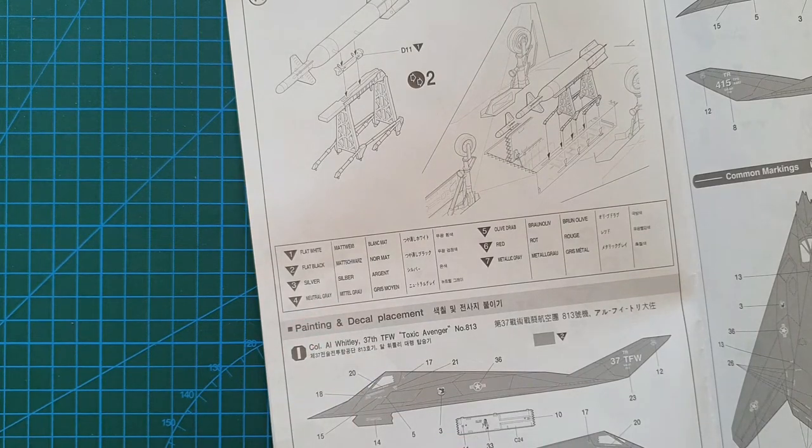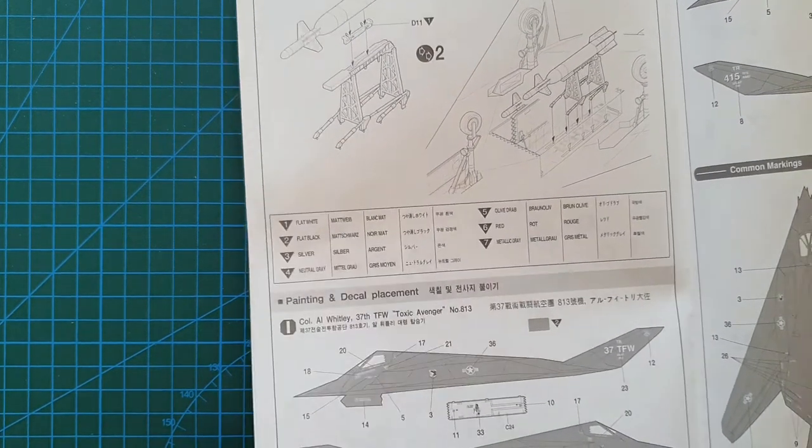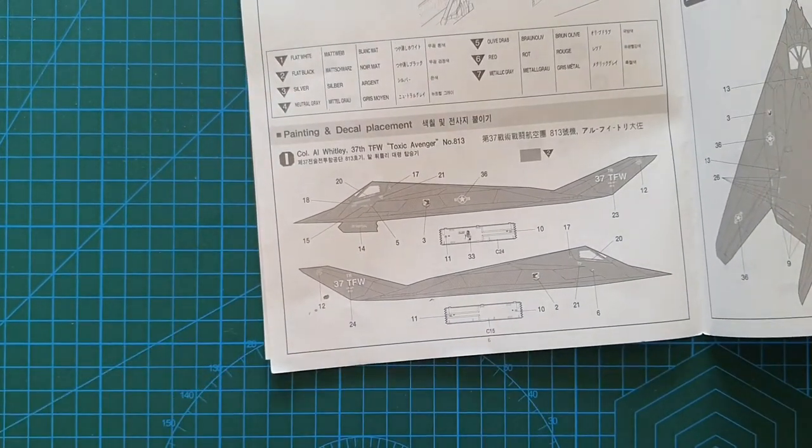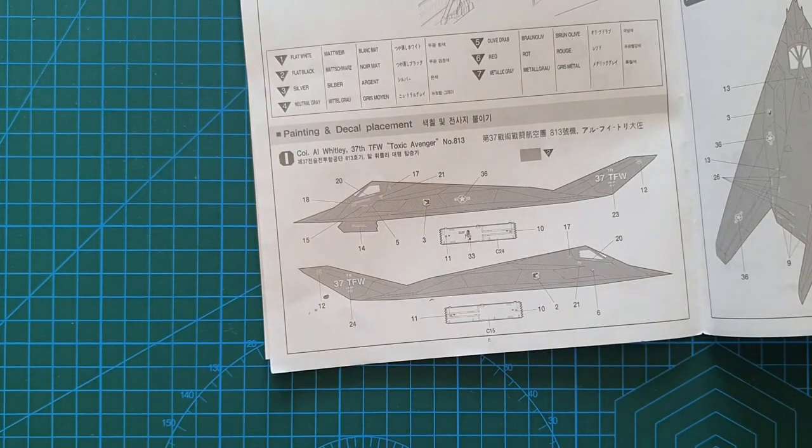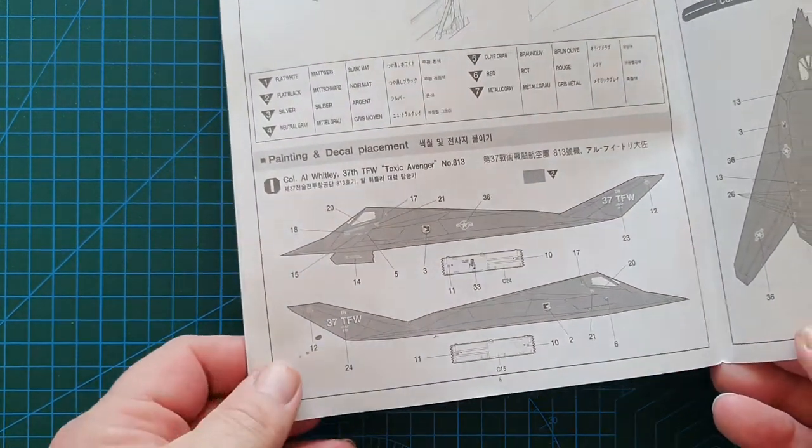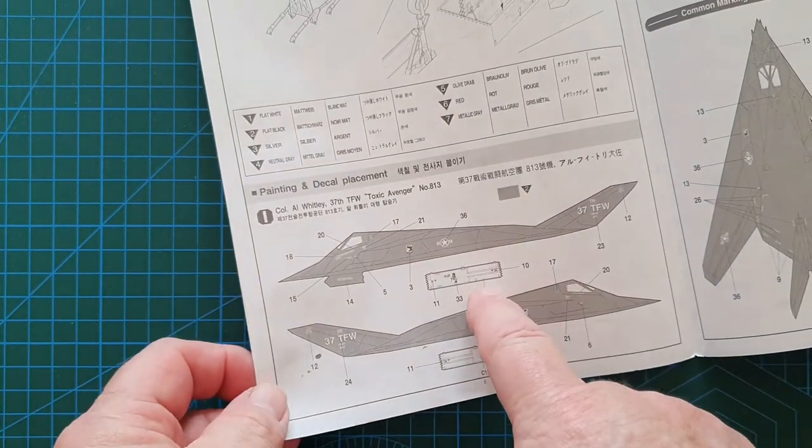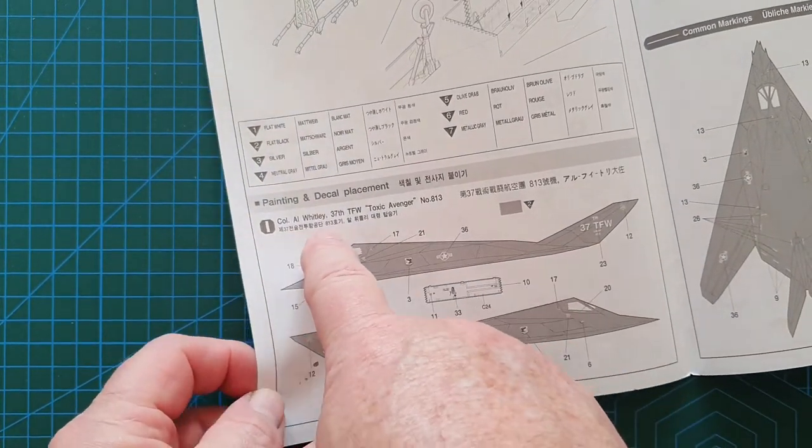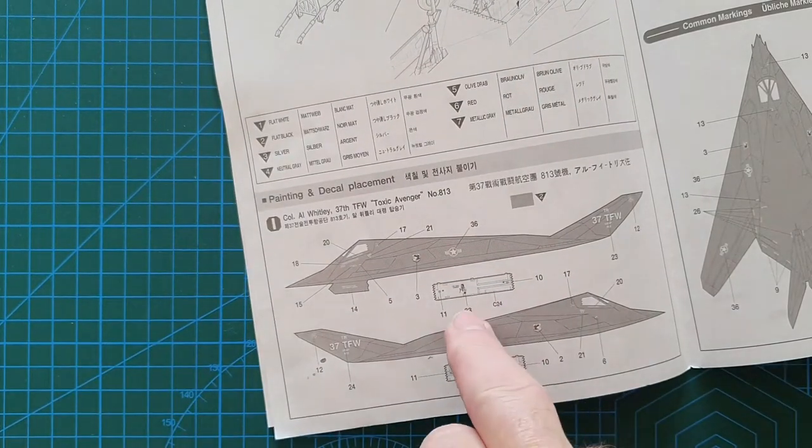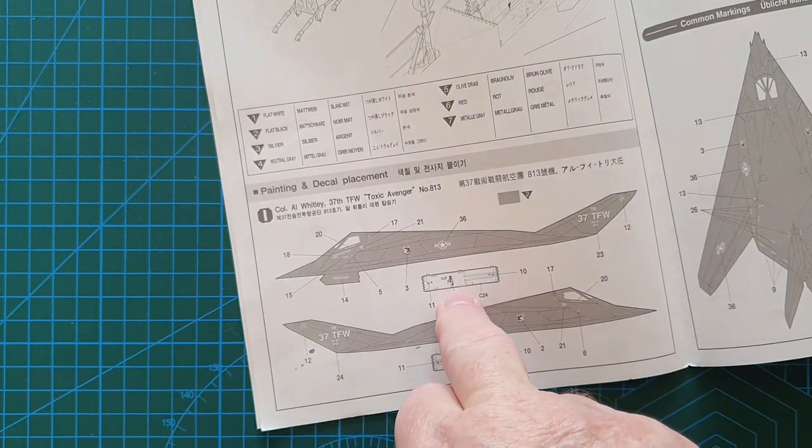There's your color callouts, no specific manufacturer, so that's fairly easy. At least it tells you what color to go for and then you just use your preferred brand. Then we get to the overall painting. Being a stealth fighter, it is overall matte black, that's it. Anti-reflective paint.